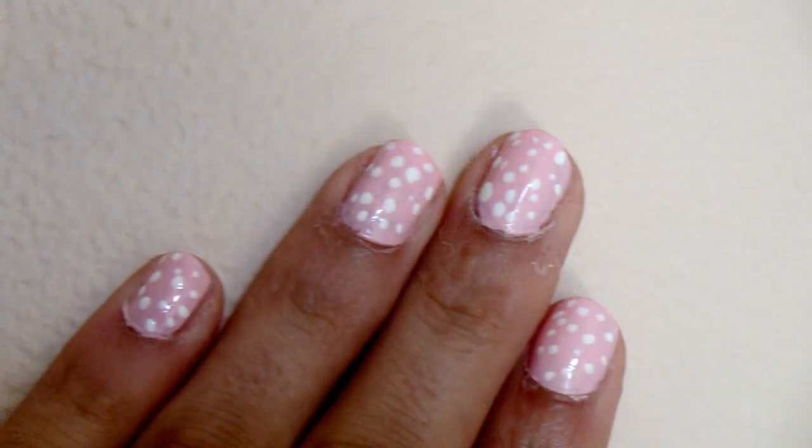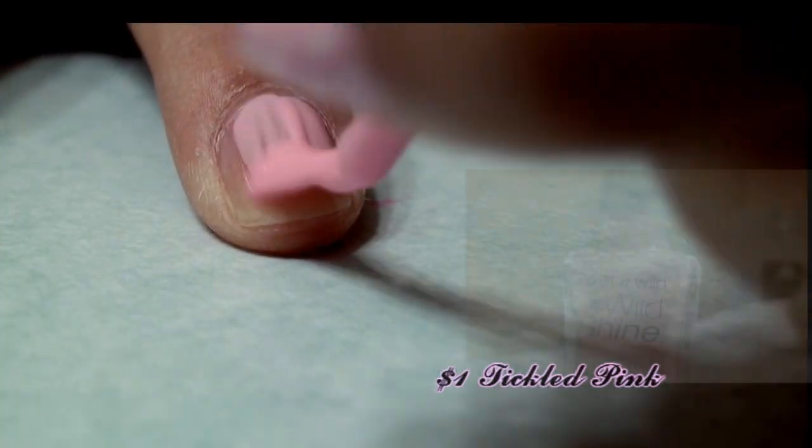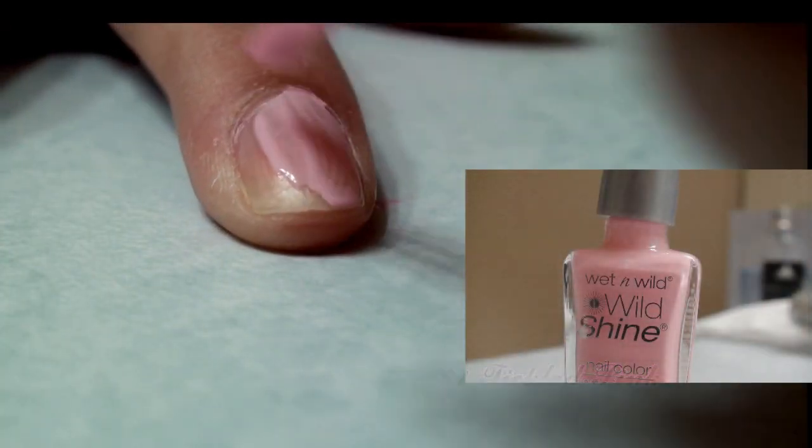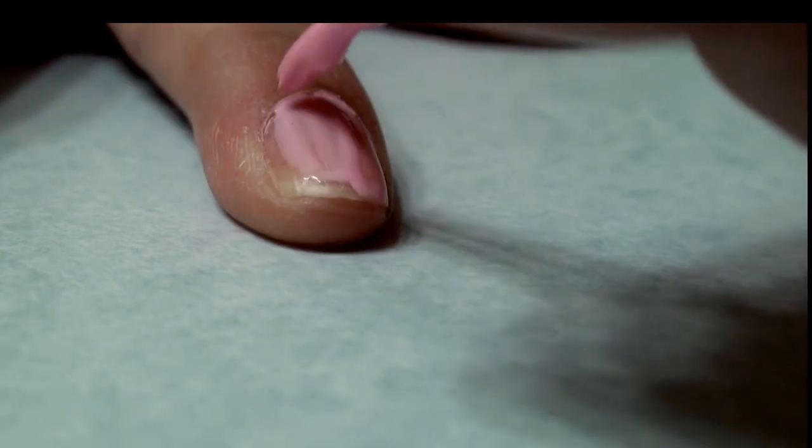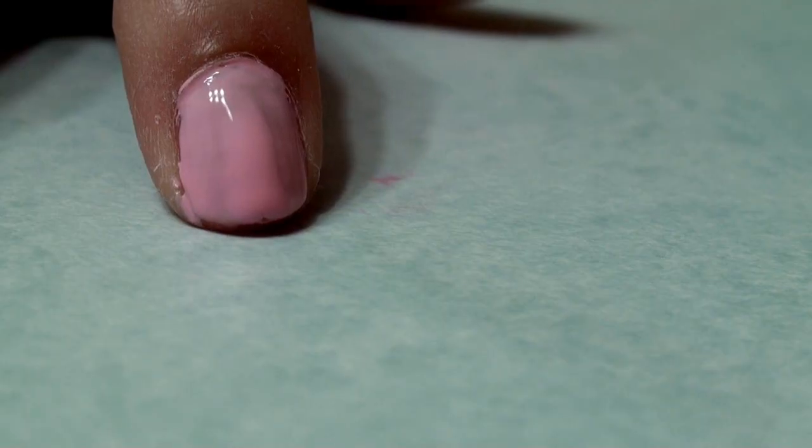This simple nail tutorial will help you get those adorable polka dots in seconds. Starting off with my first color in Tickled Pink from Wet n Wild, I'm going to apply two coats of this color onto my nail. You can also start with a base coat if you'd like.